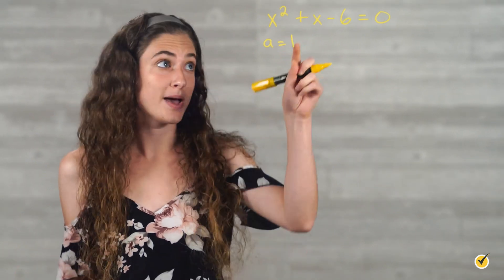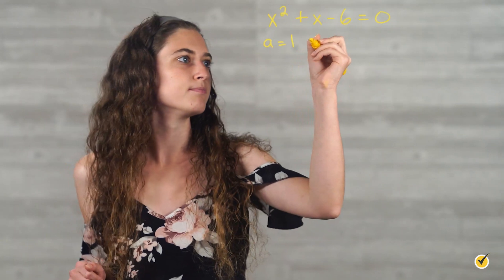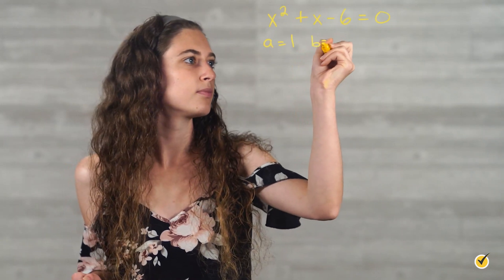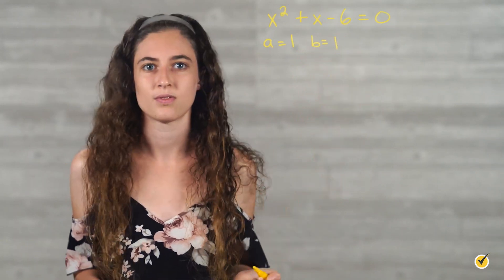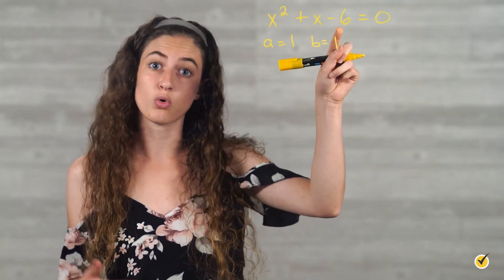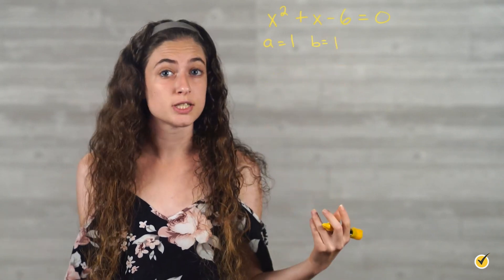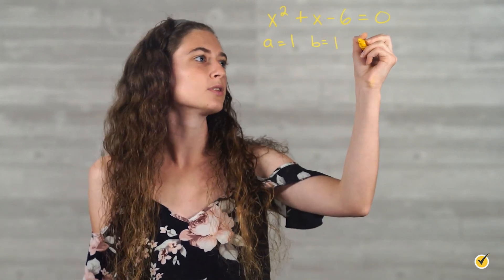In the second term, x, the value for b is also equal to the coefficient of 1. And since the last term is negative 6 or minus 6, the value for c is equal to negative 6.